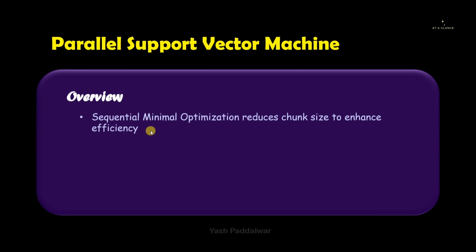Parallel SVM uses sequential minimal optimization technique, which reduces the chunk size to enhance efficiency. Instead of applying the SVM algorithm directly on the entire big data, this sequential minimal optimization method divides the entire big data into small chunks. The data in each chunk will have a similar distribution to that of the original data set.